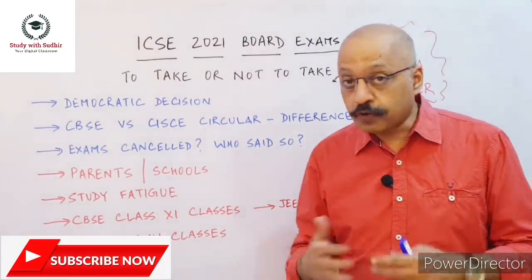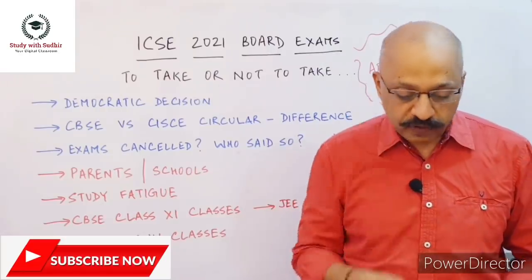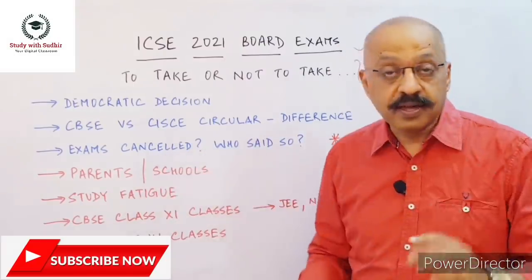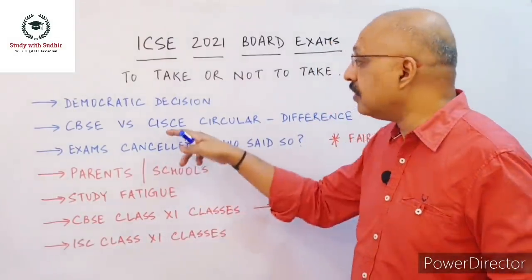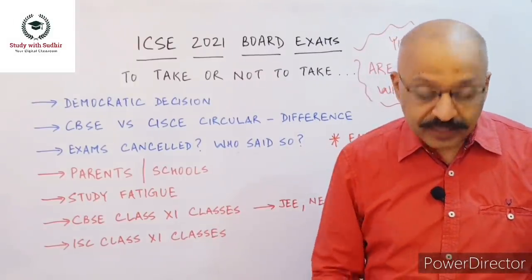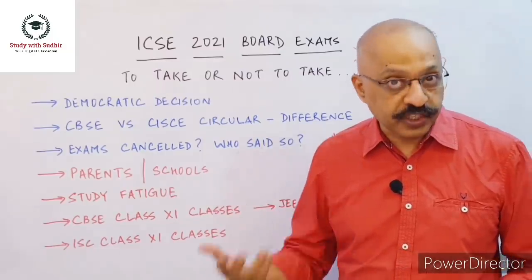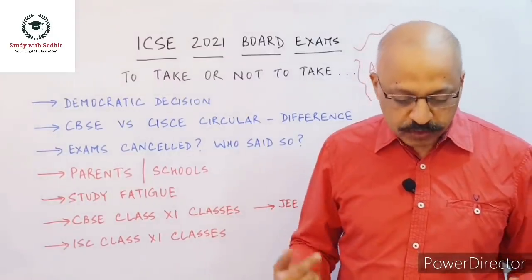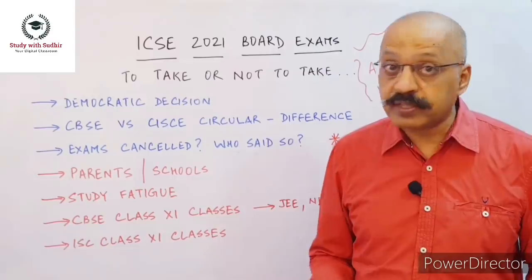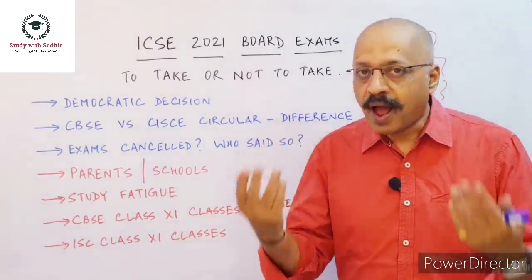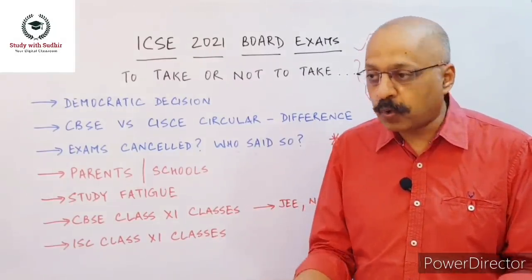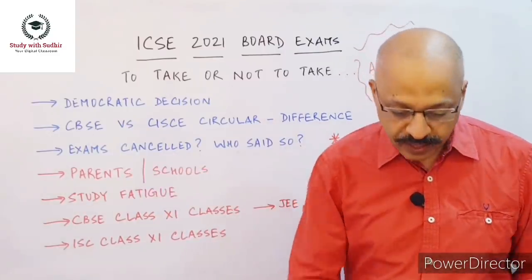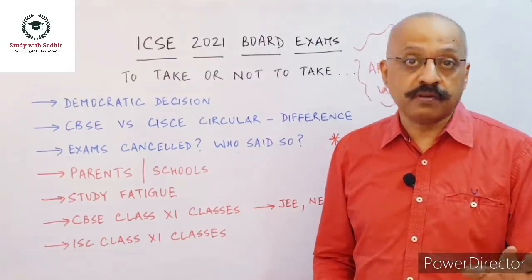You need to read the two circulars very carefully. CBSC said — and I'm quoting from the circular — the Class 10 board examinations are cancelled. It used the word 'cancelled.' The word 'cancelled' figures nowhere in the ICSC council circular — that's an important difference. CBSC said that the marks will be awarded on the basis of an objective criteria, and any candidate who is not satisfied with the marks allocated to him or her will be given an opportunity to sit in an examination whenever the situation is conducive. So if I'm a CBSC student of Class 10 and I'm not happy with the marks awarded to me, I can then choose to take the examination as and when the CBSC decides to conduct it.